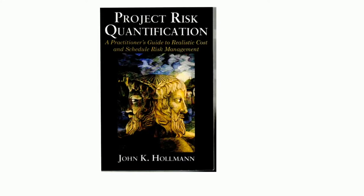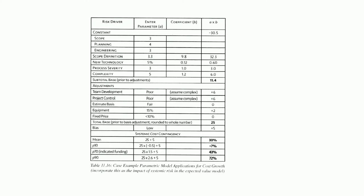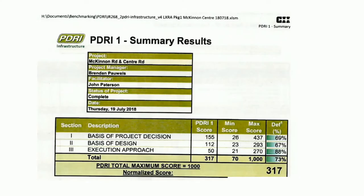This is John's book, Project Risk Quantification. His symbol is Janus — looking to the future and looking back at the past — which is good for risk management. In John's parametric model, it's a case example for cost growth. The systemic risk for cost growth shows scope definition as a key component — quite a large factor. Then new technology, process severity, complexity, team development, project controls, bias, and so on. The ones shown are basically the key elements.